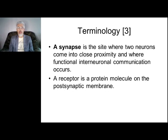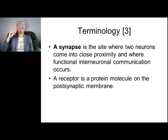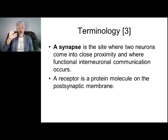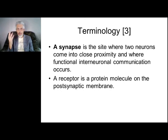A synapse is a site where two neurons come into close proximity and interneuronal communication occurs. A receptor is a protein molecule of the postsynaptic membrane. Receptors receive signals — in the nervous system, signals are neurotransmitters. Note: in the immune system, receptors bind antigens, but in the nervous system, receptors bind neurotransmitters. When a receptor contacts a neurotransmitter, ion channels open, triggering a large cascade of events inside the neuron.